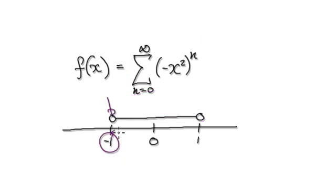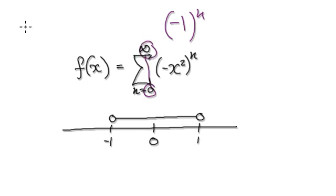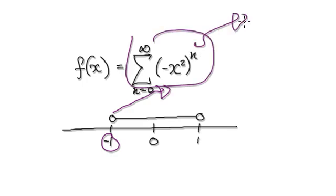When x equals negative 1, put it into here: negative 1 squared is positive, and then you've got a negative, so you've got negative 1 to the power of n. As n moves from 0 to infinity, you're just going to get minus 1, 1, minus 1, and so on — it just oscillates back and forth and never converges. So at x equals negative 1, the series diverges.